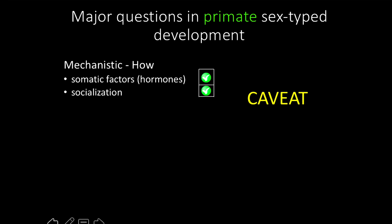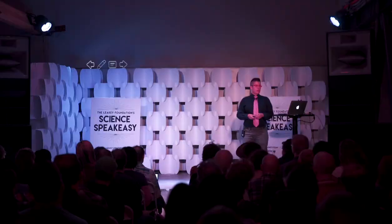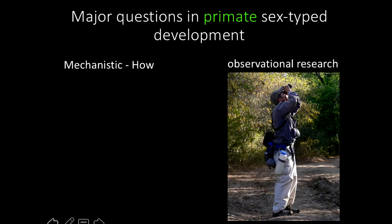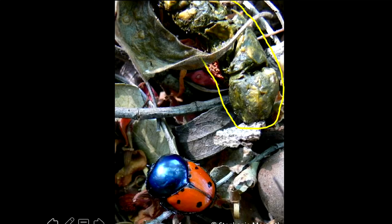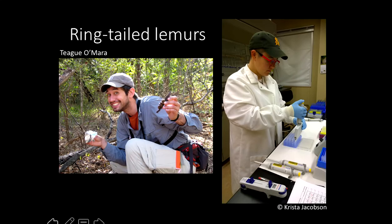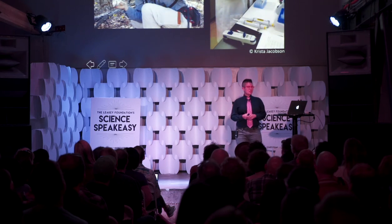Captive studies can tell us with certainty that somatic and social factors are both important for normal behavioral development, but they can't tell us how those things work in natural development — the whole point of captive experimentation is to poke the system and see what changes. This is where observational research comes in. As non-experimentalists we can't speak with as much certainty, but we know what we find is relevant to the natural functioning of populations in complex ecological and social environments. We can explore hormonal correlates of behavior in wild populations, mostly through biological materials animals leave behind — such as poop. We collect the poop, process the poop, and analyze the poop for concentrations of hormones in the lab.